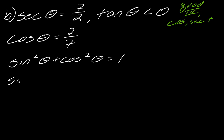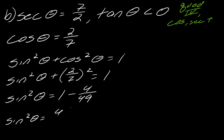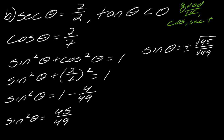Plugging in cosine: sine squared theta plus 2 over 7 squared equals 1. So sine squared theta equals 1 minus 4 over 49, which is 45 over 49. Therefore sine of theta equals plus or minus the square root of 45 over 7. Since we are in quadrant 4, only cosine and secant are positive, so sine of theta is the negative square root of 45 over 7.